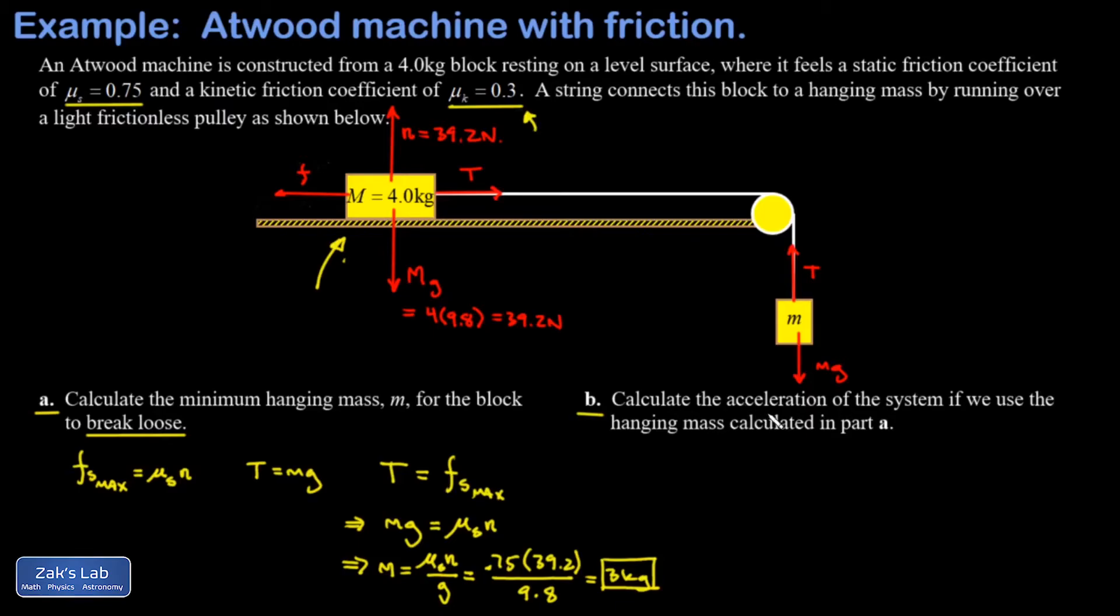This is no longer a static situation, and that means that this tension in the string cannot be equal to little mg pulling down on that little mass. In fact, I know the system is accelerating downward, and that means little mg is bigger than the tension, so the net force points downward.